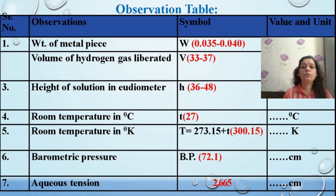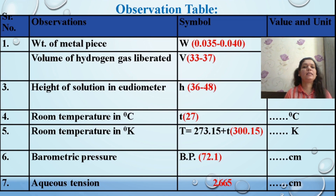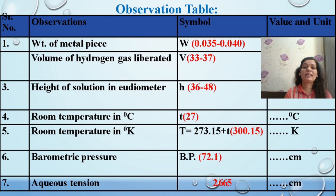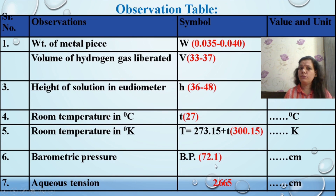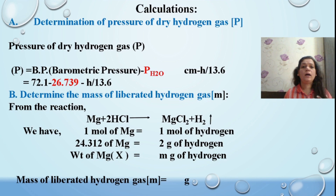Convert the room temperature to Kelvin. I have prescribed some values marked in red — you can choose any value from the given range. The observation range provided is 0.035 to 0.040 g. Choose your values of weight, volume released, height of solution in the eudiometer, and temperature, and proceed with the calculations to find out the value of R.